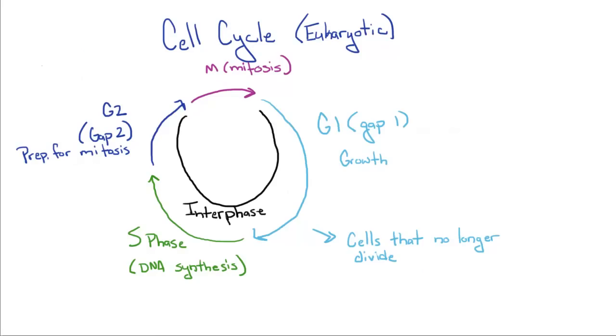Eukaryotic organisms are going to go through a cell cycle. There are four phases in the cell cycle. You have the G1 phase, or the GAP1 phase, which is where growth occurs in synthesis of molecules that the cell needs to grow and function.